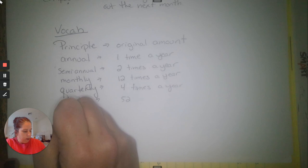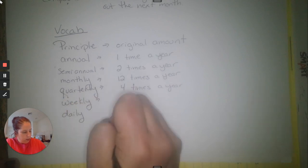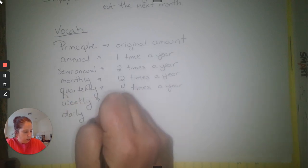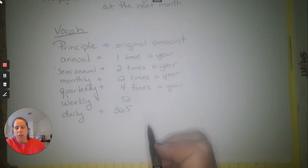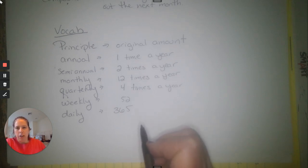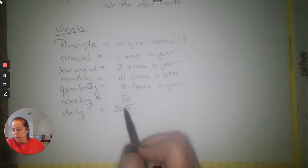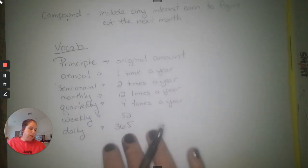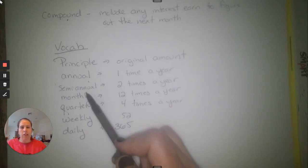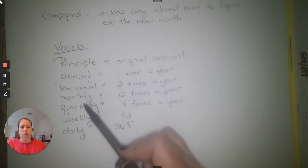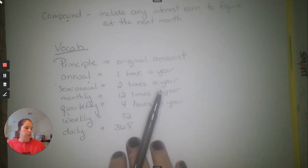Then we have 'weekly,' which is 52 times a year, and 'daily,' which is 365 times a year. Some of you might wonder about leap years — they don't actually include that, so it's always 365. To summarize: annual is 1, semi-annual is 2, quarterly is 4, monthly is 12, weekly is 52, daily is 365. You need to know these.